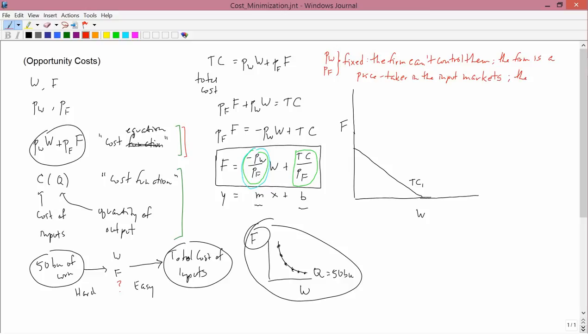This is an assumption of competition in the input markets. The firm is competitive in its input markets. So competitive means taking prices as given, just like we assumed that the consumer couldn't change the price of apples and oranges or anything else that the consumer bought. The firm can't change the price of water and fertilizer or anything that it buys.